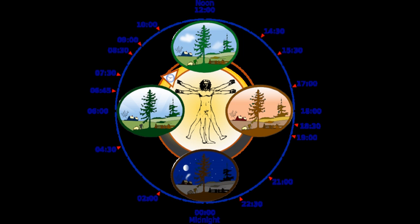Chronobiology comes from the ancient Greek chronos, meaning time, and biology, which pertains to the study or science of life. The related terms chronomics and chronome have been used to describe either the molecular mechanisms involved in chronobiological phenomena or the more quantitative aspects of chronobiology, particularly where comparison of cycles between organisms is required.